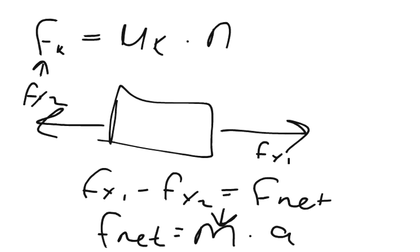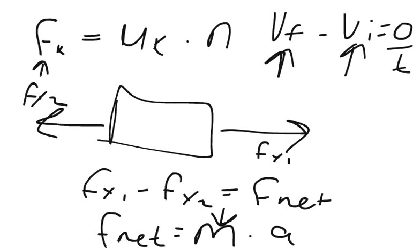So at constant speed, that means that v final minus v initial, if it's constant, say if that was 5 kilometers per hour and it's still 5 kilometers per hour there, so v final minus v initial equals 0. So 0 over t, the change in velocity over time is acceleration. So 0 over t means that our a is 0.